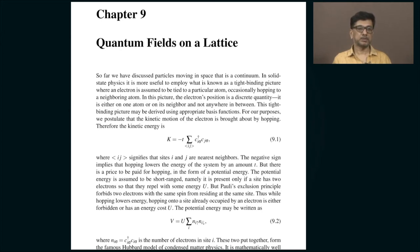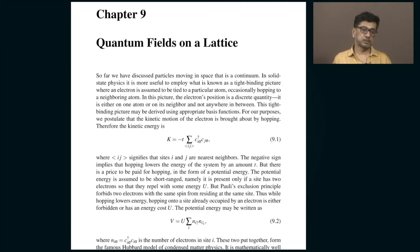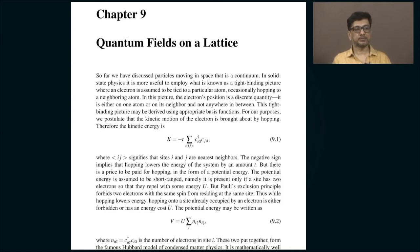This is called the tight binding model because the electrons are tightly bound to one of those lattice sites. Conduction takes place when an electron that is tightly bound to one lattice site tunnels across and finds itself on the neighboring one — this is called hopping. What is called kinetic energy in a continuum system is called hopping in a lattice system.